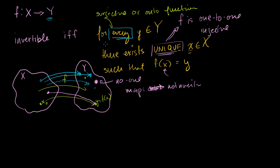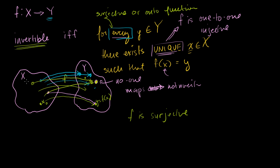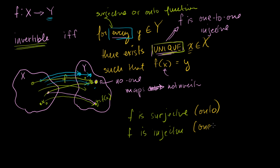The whole reason for this video is to restate the condition for invertibility using the vocabulary from the last video. For every y in our codomain there exists an x that maps to it — we can say f is surjective. But surjective alone doesn't guarantee a unique mapping from X to each element of Y. To satisfy the unique condition of invertibility, we also have to say f is injective. The less formal terms: surjective is 'onto' and injective is 'one-to-one'.